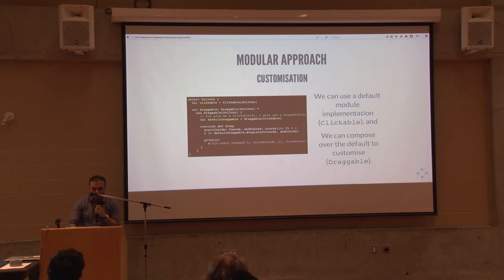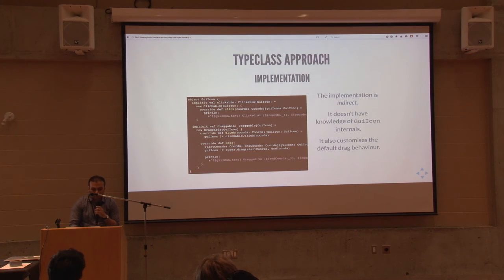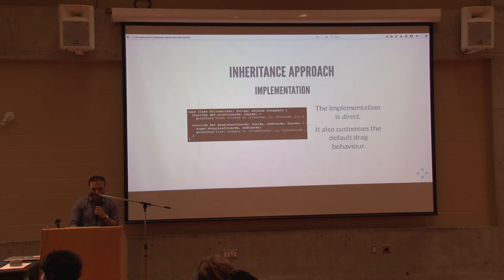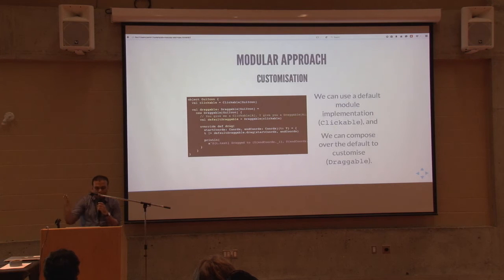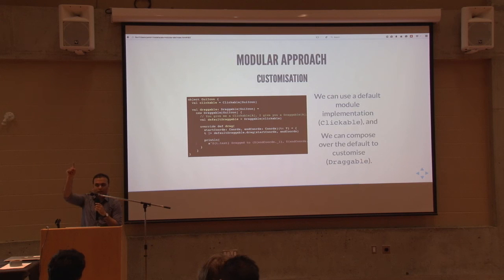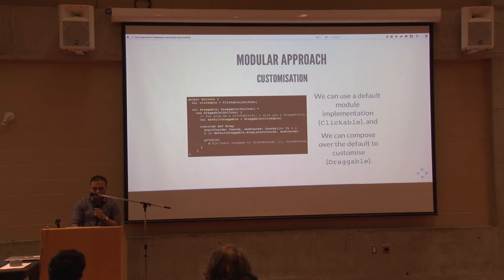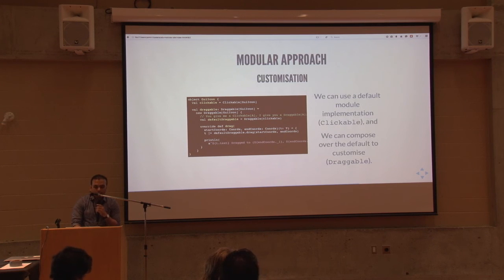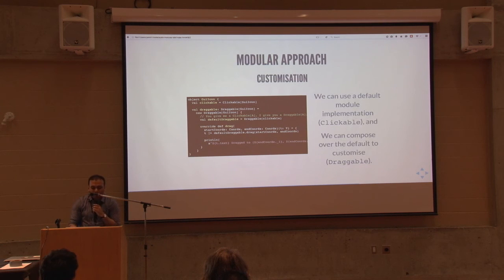You create a draggable module, which composes together your default draggable module — obtained by passing the clickable module into the draggable functor — and then you create the default instance. You store that internally inside your exposed draggable module and use it to implement the default behavior, just like in the type class approach you have a super drag, and in the inheritance approach you also have a super drag. In the modular approach, you use the default module, then print your custom text — the GUI icon text was dragged from these coordinates to those coordinates.